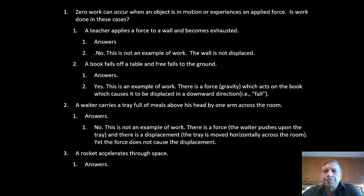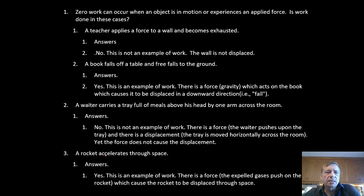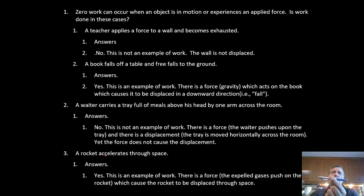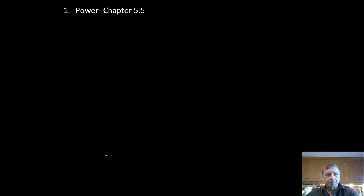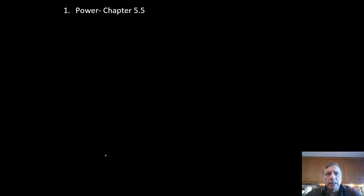A rocket accelerates through space — is work done? Yes. The exhaust goes out the back, pushing the rocket forward. There's a force to the left and a displacement to the left, so the rocket has force times displacement — work is done. That brings us to the end of work; we'll do more examples shortly.